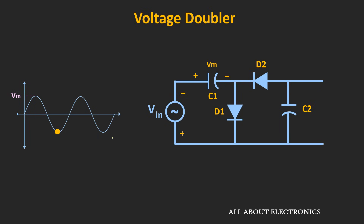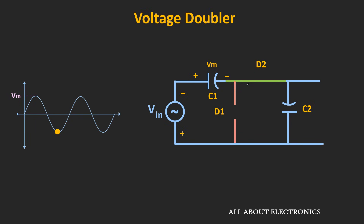During the negative half cycle, diode D1 will become OFF and diode D2 will become ON. Because now the cathode of diode D1 is more positive than the anode. For diode D2, the anode is more positive than the cathode terminal. Let's replace these two diodes by their equivalent circuit — the equivalent circuit during the negative half cycle will look like this.